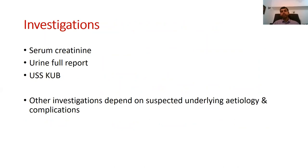There are three basic renal-related investigations that all patients with suspected kidney injury should have. First, serum creatinine assessment gives a rough idea about kidney function. Second, the urine full report is very important — depending on the type of urinary sediment, it helps identify the underlying aetiology. For pre-renal causes of AKI, you expect a bland urinary sediment — some proteins but no active sediment, no significant dysmorphic red cells or red cell casts.